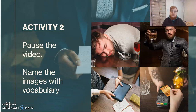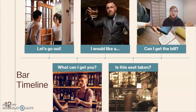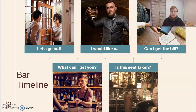Now we have activity two — pause the video and name the images with the vocabulary that we covered. When you're ready, we can move on to the bar timeline. So: let's go out, what can I get you, I would like a, is this seat taken, can I get the bill? This is the order of vocabulary expressions that you can use throughout the night for your first bar experience.